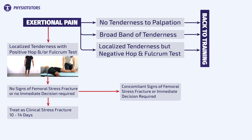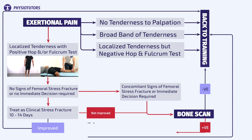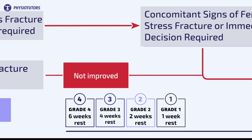Number three: in case there are also signs of a femoral stress fracture, the patient is referred for a bone scan. The treatment for tibial stress fractures is rest. The duration of rest depends on the outcome of the bone scan and can vary from one week in grade one up to six weeks in grade four stress fractures.